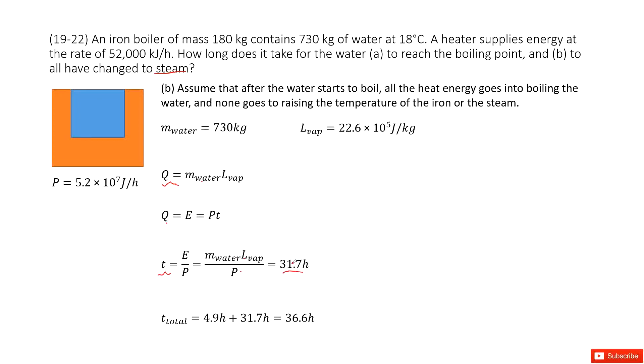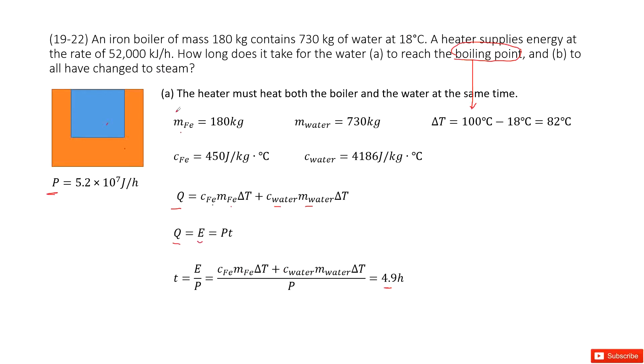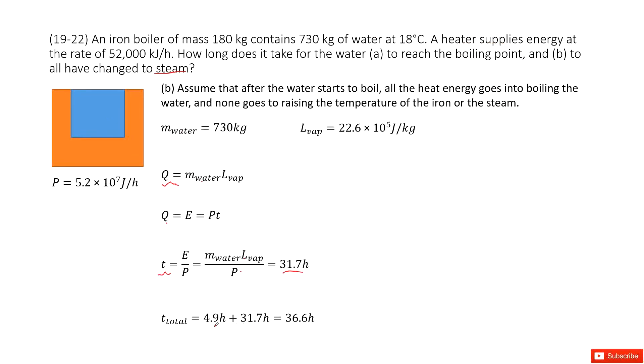This is just from boiling point liquid to gas. But from the very beginning at 18 degrees, we need to consider part A. Part A is from 18°C to the boiling point at 100°C. We add them together to get the total time for the entire process. Thank you.